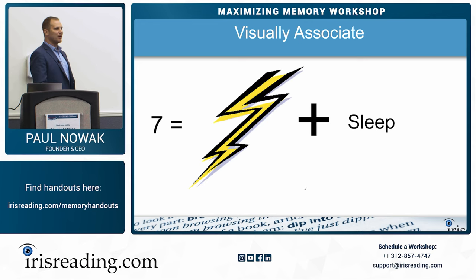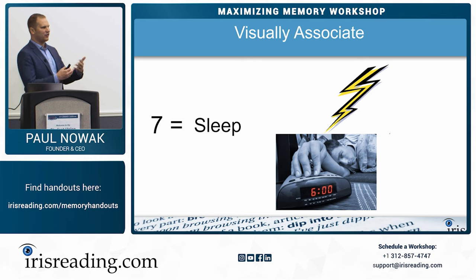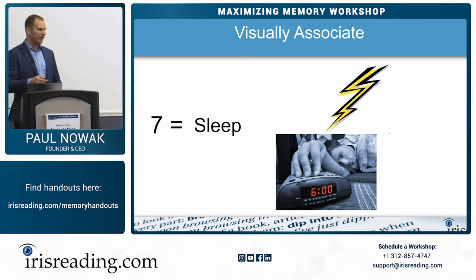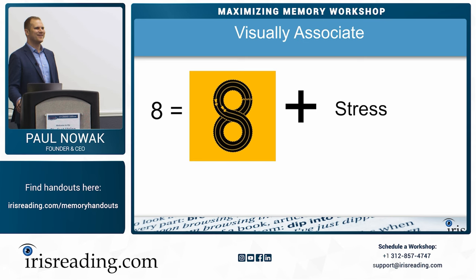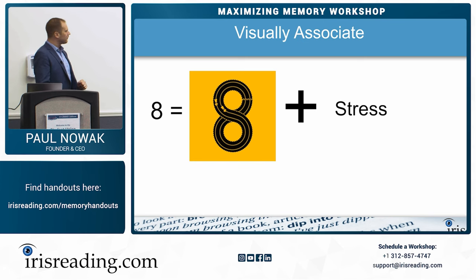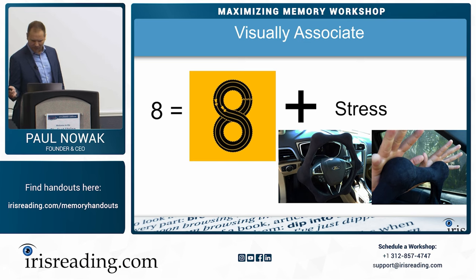Number seven is lightning, and we've got to remember sleep. Imagine a new alarm clock with a special feature: when you hit snooze, it zaps you with lightning to dissuade you from hitting snooze too many times. Seven is sleep — alarm clock, lightning when you hit snooze. We move on to eight, which is stress. The image is a racetrack. Imagine they actually made racetracks with intersections where cars could crash — very stressful. The race car drivers are sweating, and to relieve stress they have stress balls embedded into the steering wheel.